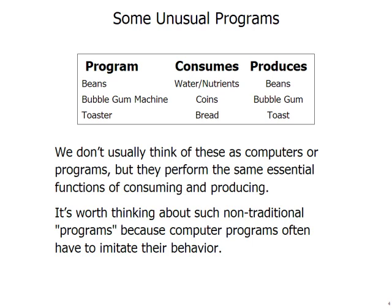Similarly, you might think of a bubble gum machine — it consumes coins and produces bubble gum. Or a toaster: it consumes bread and produces toast. You might think it's strange to think of these things as programs, but it's worth thinking about them that way because we might have to write computer programs that simulate them. We might be called upon to simulate a bubble gum machine or another kind of vending machine. Also, more and more, appliances and other objects have computers built into them. For instance, some fancy toaster might have a little computer chip that adjusts for the type of bread and how toasty you want it, and produces different types of toast depending on your settings.